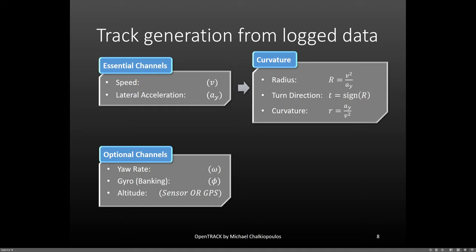Also, although I have not tried it, you can use a gyro or accelerometers to obtain the banking of the circuit at each point from a very slow lap on the racing line. Finally, you can use an altitude sensor, GPS data or even Google Earth to get the altitude.